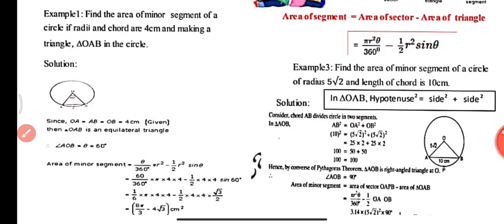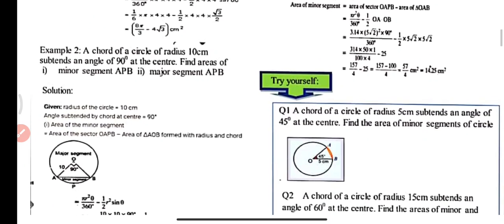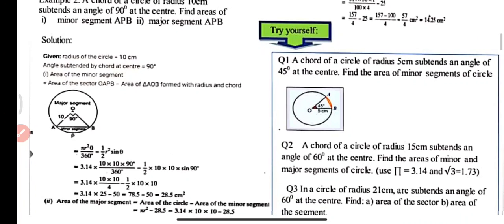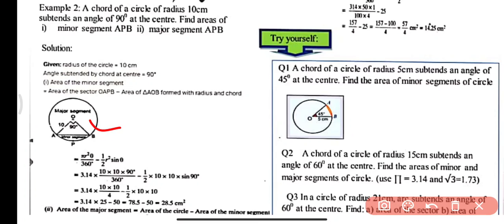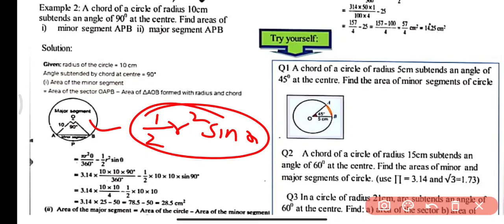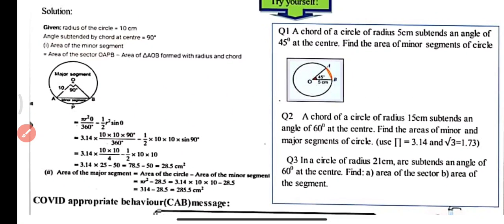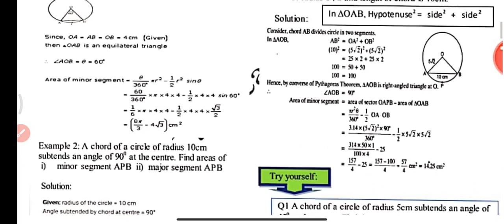Example 2: A chord of a circle of radius 10 cm subtends an angle of 90° at the center. Find the area of the minor segment APB and major segment APB. With the central angle as 90°, we use ½r²sinθ for the triangle area. Substituting all values, the area of the minor segment is 28.5 cm². The area of the major segment = area of circle − area of minor segment = 285.5 cm².